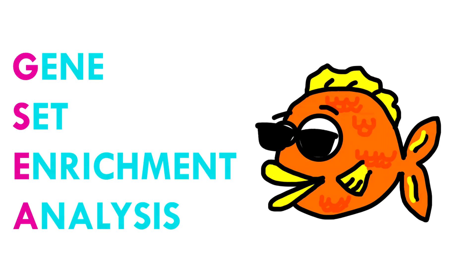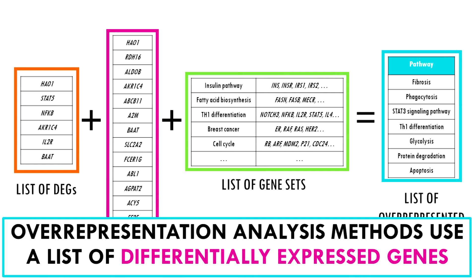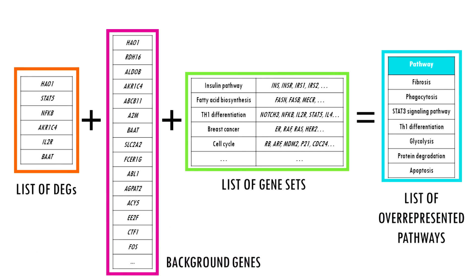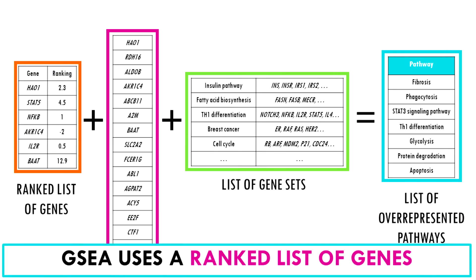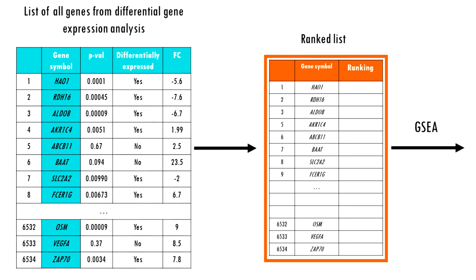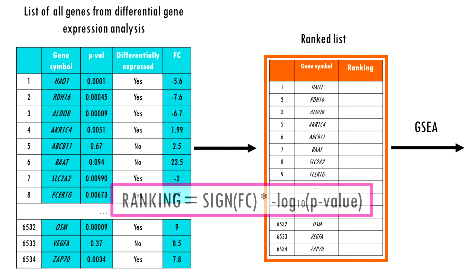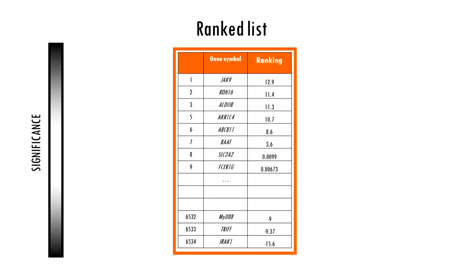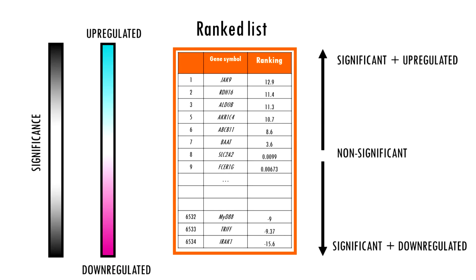So let's see how GSEA works. The steps are very similar to over-representation analysis, but the big difference is that the input is not a list of genes but a ranked list of genes. Ranking means the genes are ordered by some score — a common way is by level of differential expression. The p-values tell us how significant the change is, and the log2 fold change tells us the direction and strength of the change, i.e., whether genes are up-regulated or down-regulated. So at the top of the list you'll have the most up-regulated significant genes, and at the bottom the most down-regulated significant genes.